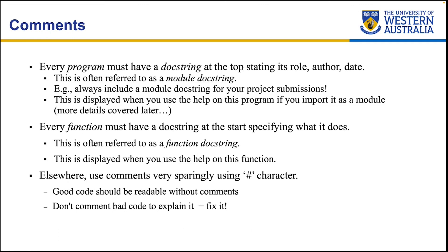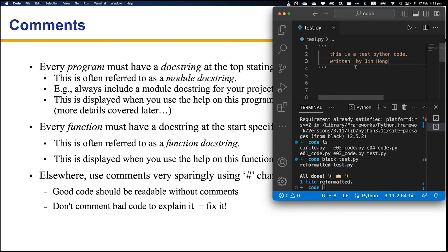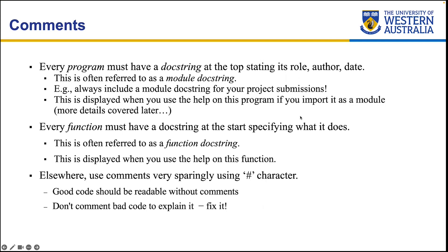Every function must have a doc string at the start specifying what it does. So this is often referred to as a function doc string. This is a module doc string, and if you create a function inside a function, that's called a function doc string. So this is displayed when you use the help on this particular function. Elsewhere, use comments very sparingly using the hashtag character. If you type a hashtag character inside Python code, that's regarded as comments, so anything after the hashtag is ignored by the interpreter, so it doesn't run. The good code should be readable without comments as well, but obviously, some of the code that you write can be quite complex, so you want to add some comments to explain what it is doing and how it's doing that. Also, don't comment bad code to explain it, you should fix it.